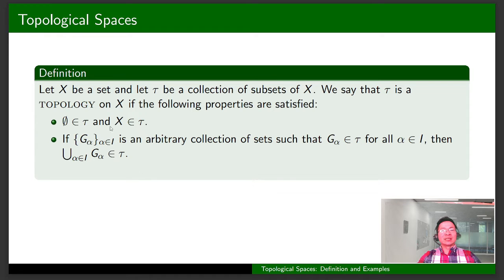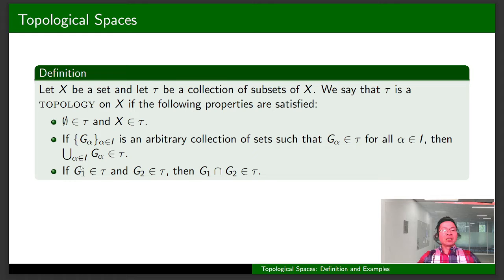If this condition is satisfied, people say that τ is closed under arbitrary union. If G₁ is in τ and G₂ is in τ, then the intersection of G₁ and G₂ belongs to τ. This means that τ is closed under the intersection of two sets.